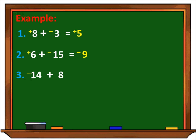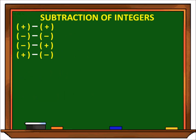Number 3: negative 14 plus 8. Mas malaki yung 14, kaya ang sign na gagamitin ay negative. Kaya ang answer natin ay negative 6. And number 4: negative 11 plus 23. Since mas malaki yung 23, siya ay positive. Kaya ang sagot natin ay positive 12. How about subtraction of integers?